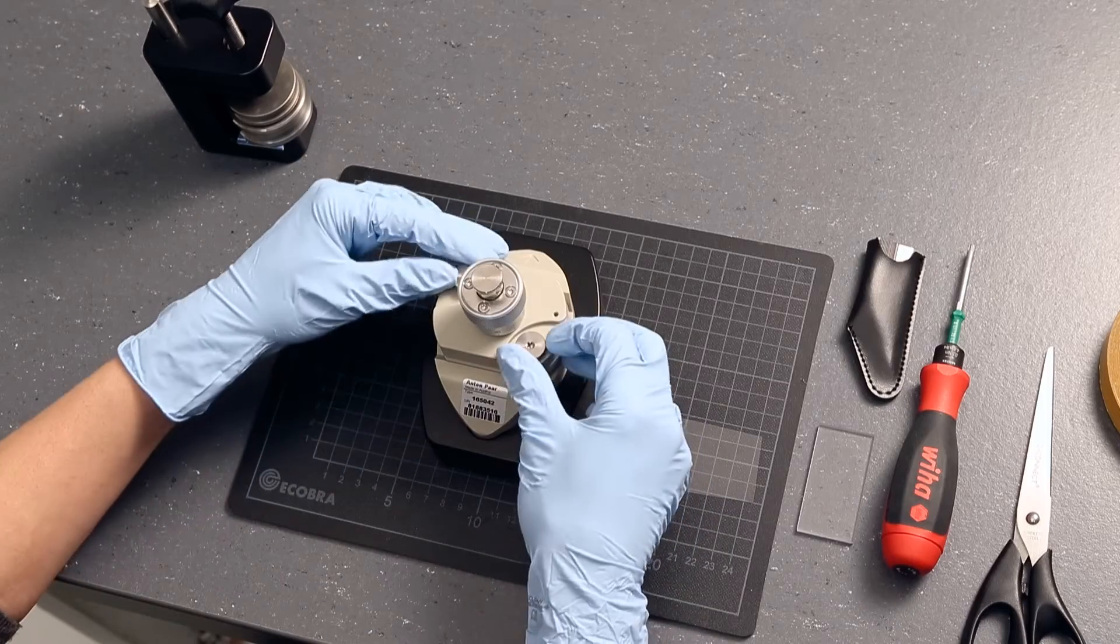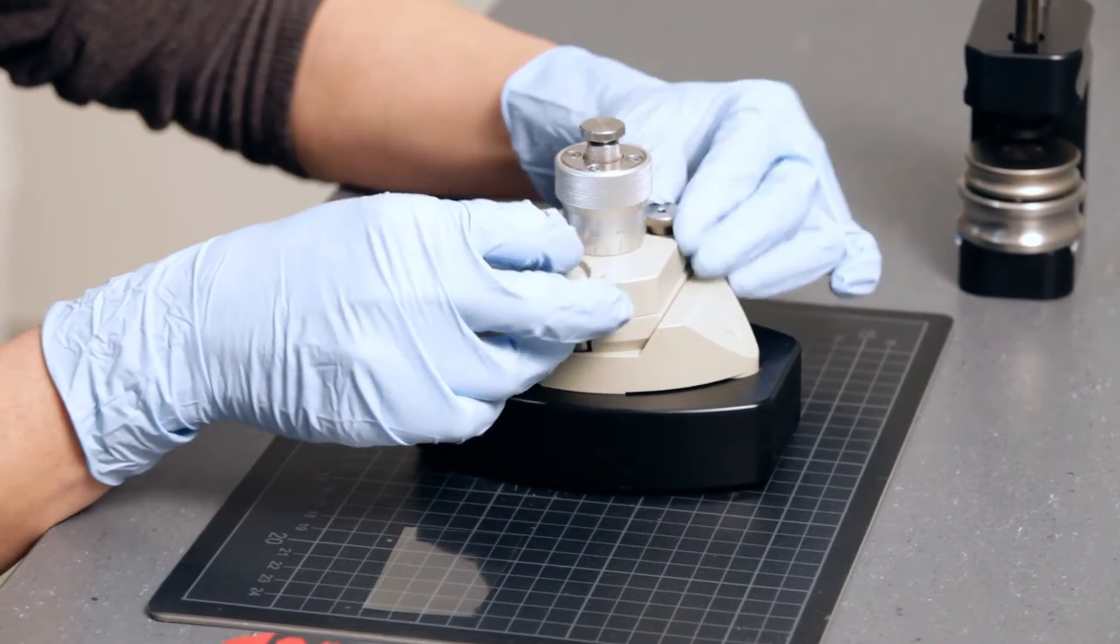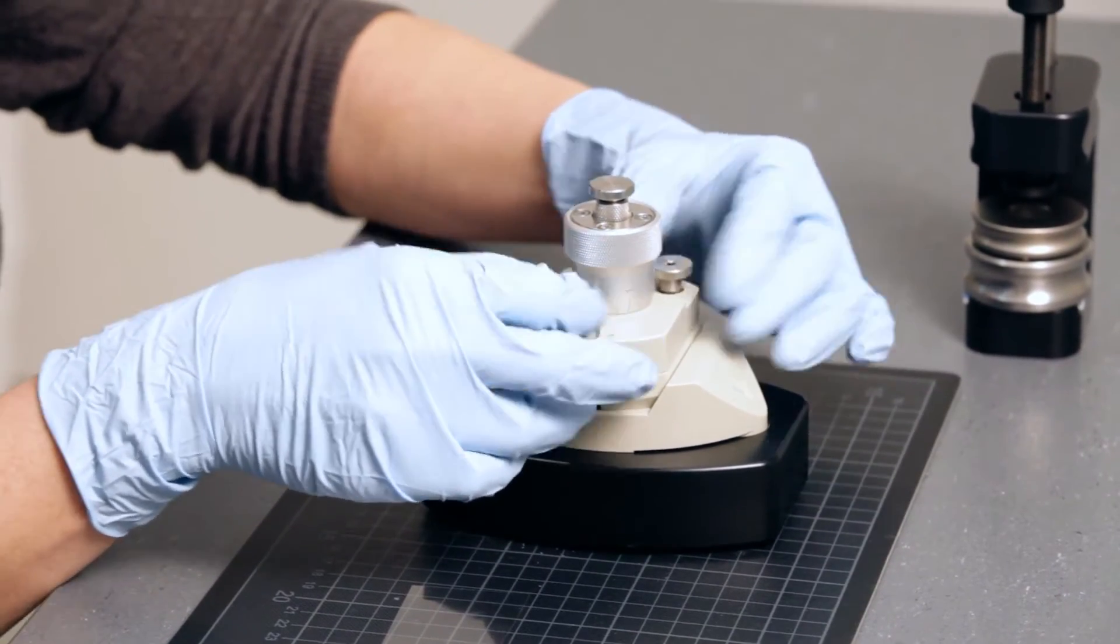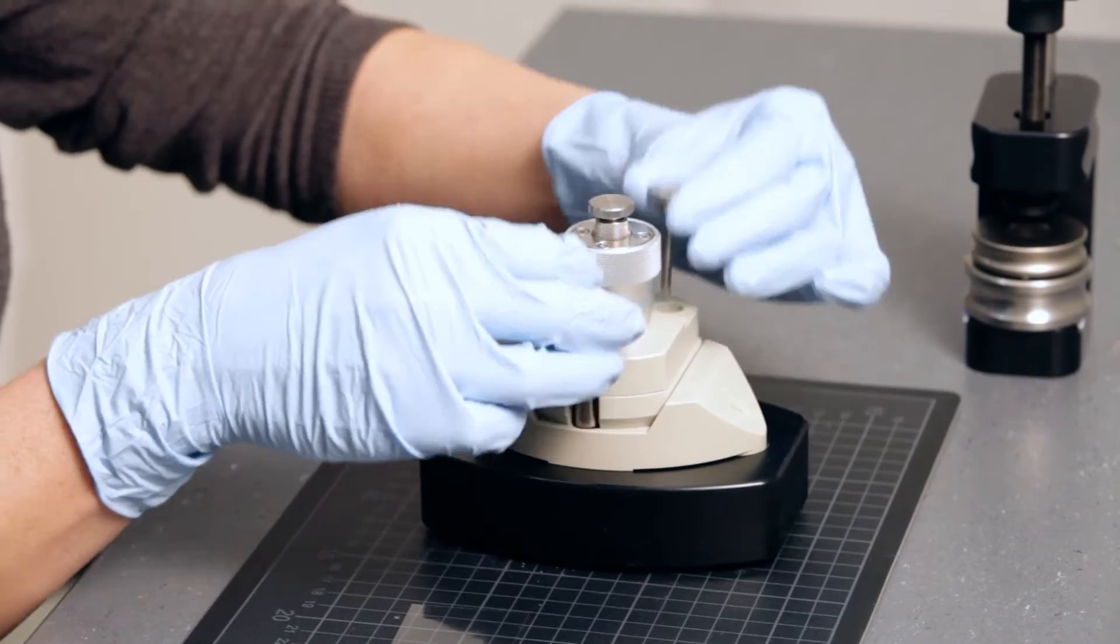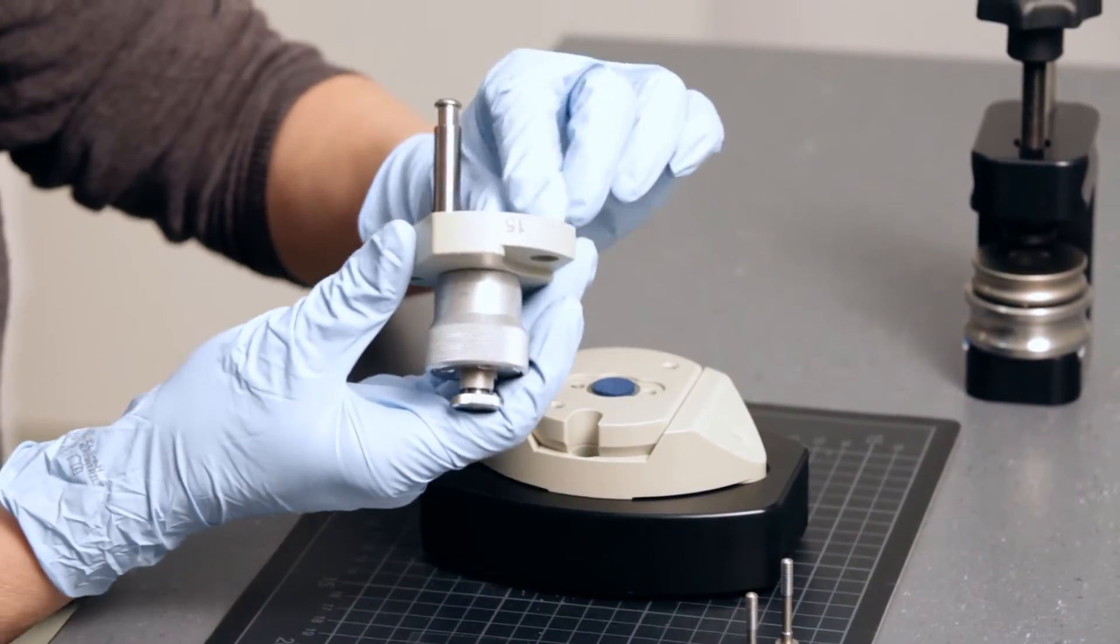First, you need to disassemble the cell. Remove the two screws to open the measuring cell. Secure the spacer gasket.